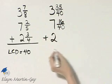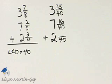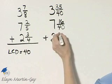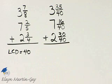And then our last mixed number, 3 fourths. What do I multiply 4 by in order to have 40? I multiply it by 10. So remember the 10. 3 times 10 is 30. So now let's go ahead and add.